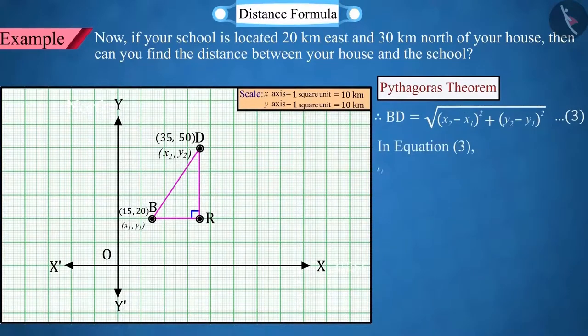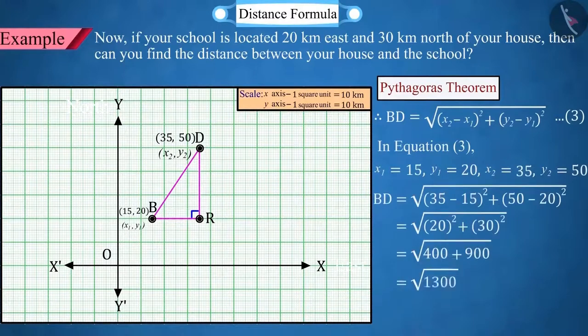Now, in equation 3, put the values of x1, y1 and x2, y2, from which the distance between the points B and D is obtained as 10 square root 13.